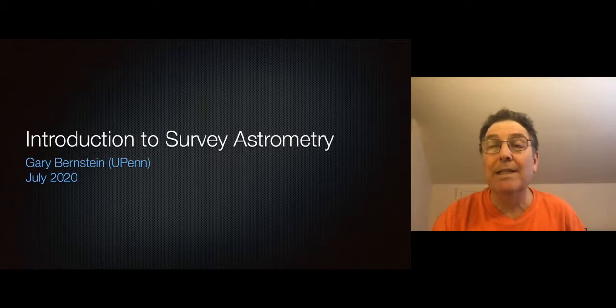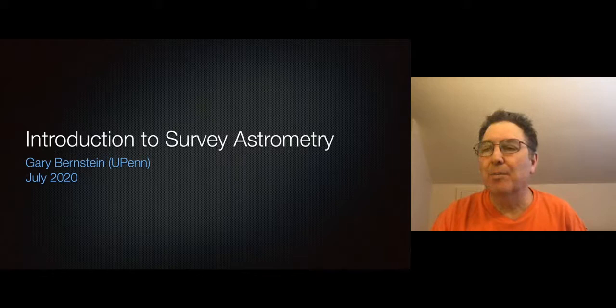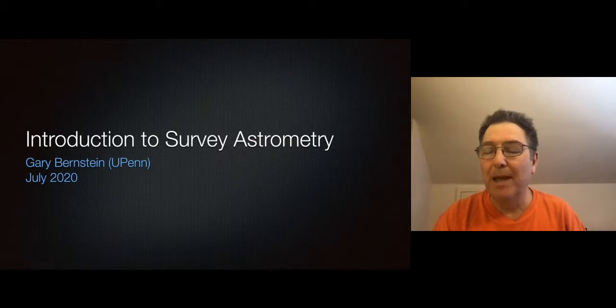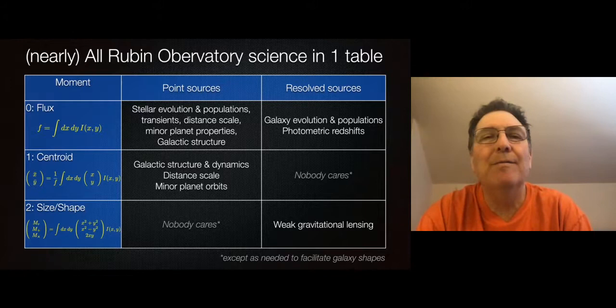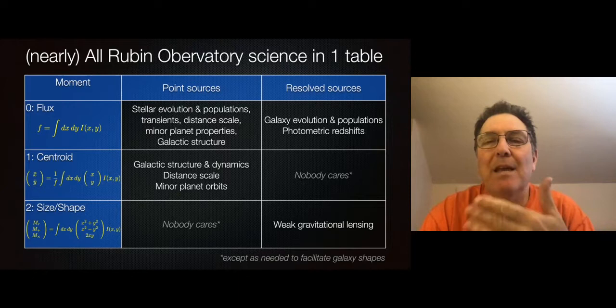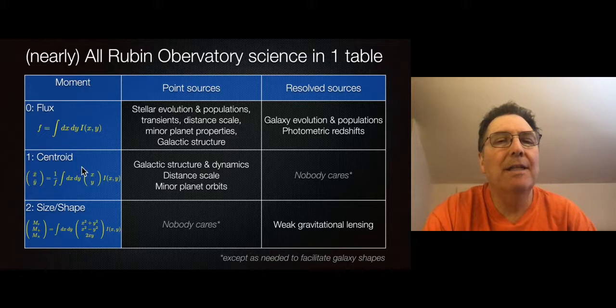This lecture is going to be about astrometry, which is maybe the oldest part of quantitative astronomy. Measurements of stellar positions go back thousands of years, well before there were telescopes. I'm a relative newcomer to it, and I've spent a lot of time trying to get this to work on the Dark Energy Survey, predecessor to Rubin. I'll share some of what I've learned. First, a quick overview of the measurements we'll be making on Rubin images that will fuel just about all LSST science.